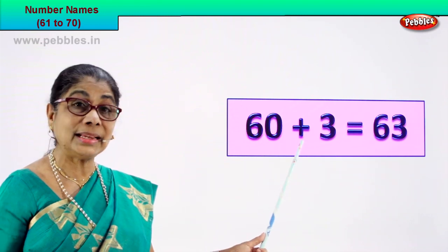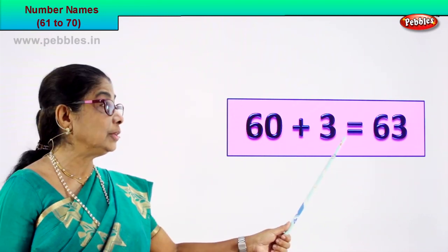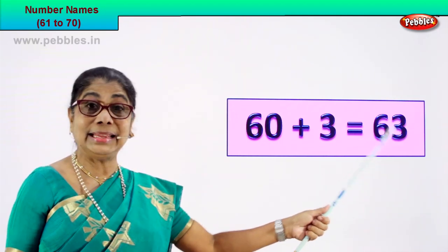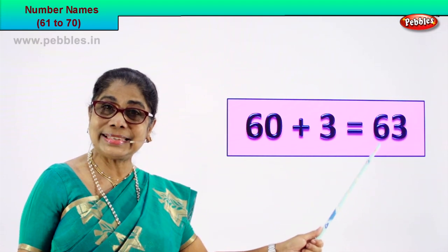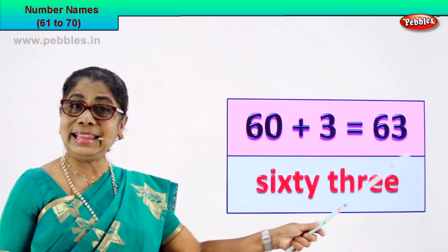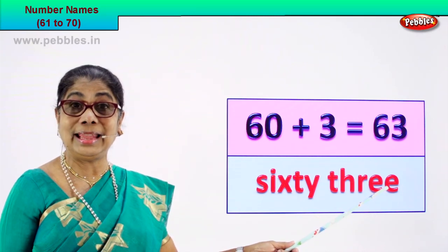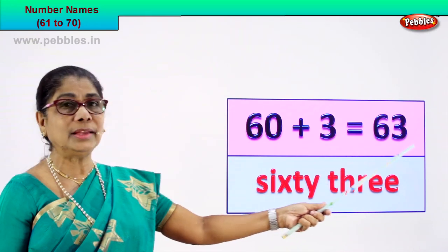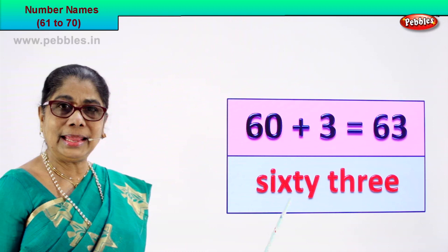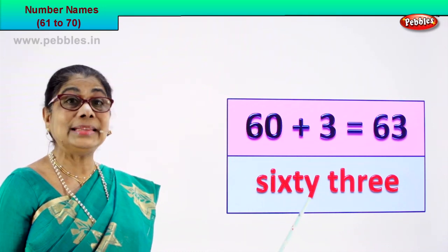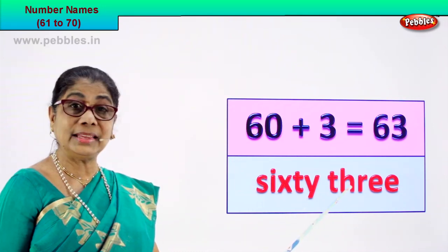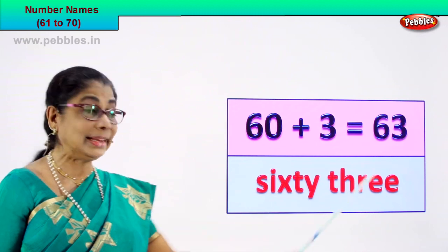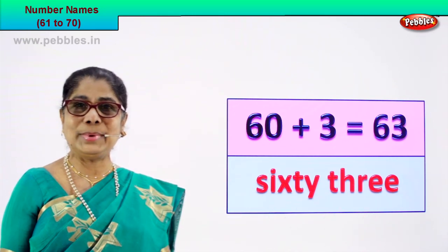60 plus 3 is equal to 63. 6 and 3, 63. Now the numeral 63 — how do we write its name? Spell and write. You already know 60, you know 3, that's all. S-I-X-T-Y, 60. T-H-R-E-E, 3. 63. 6 and 3, 63. Sixty-three — number name.